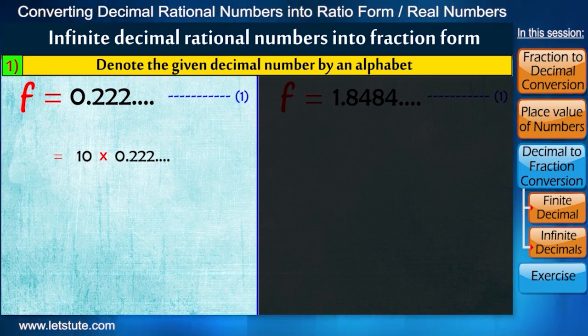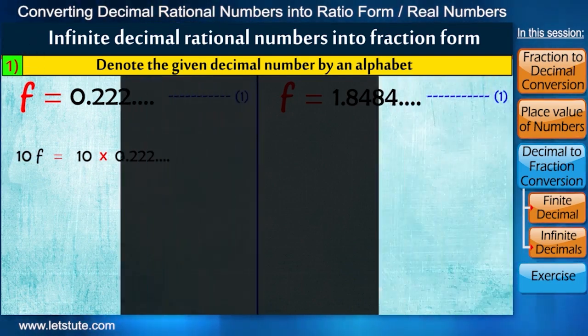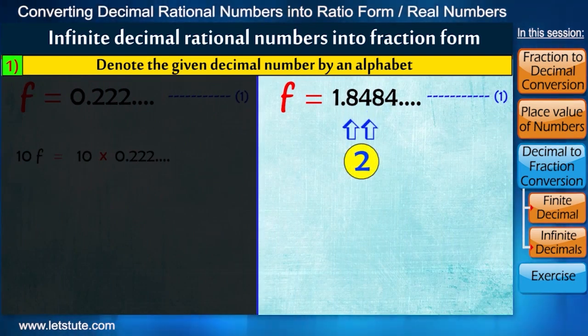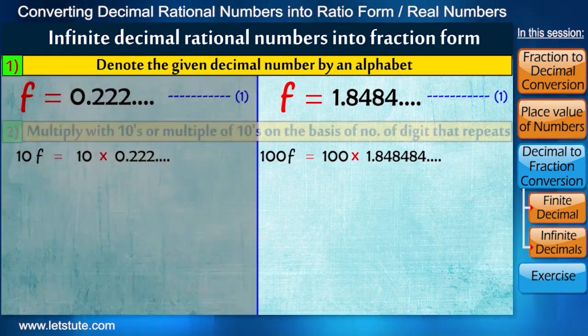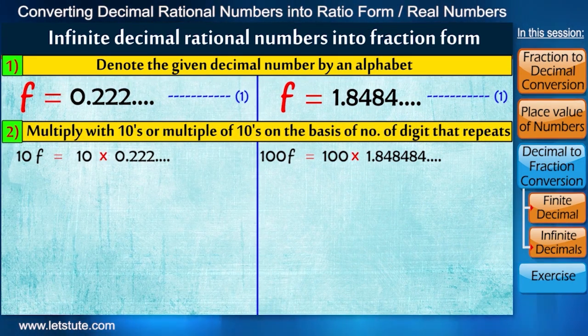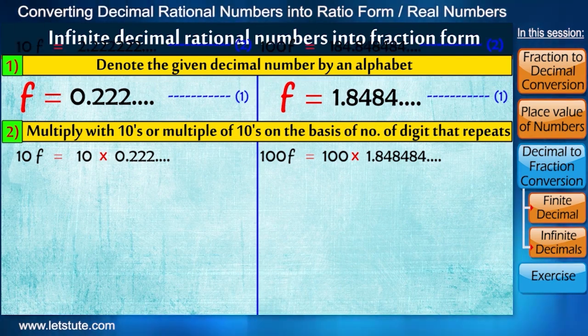Now as we know that we are multiplying 10 on right-hand side, so we'll also multiply on left-hand side to balance this. Same way, in second number, 2 digits are repeating. So we multiply by 2 tens, that is 100 on both sides. So this will be equal to...